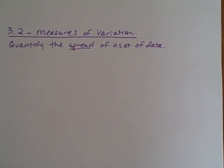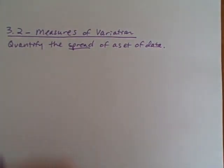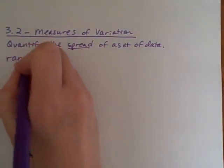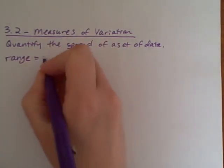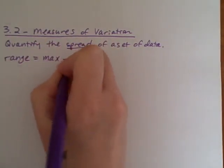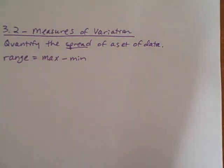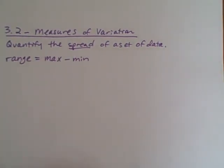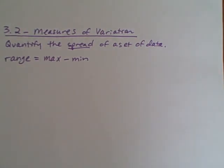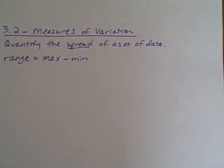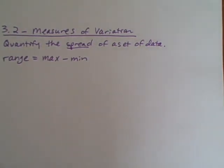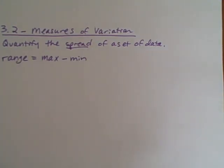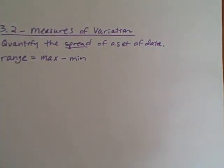There's a couple different ways we can do that. One we actually already talked about when we were doing histograms - we talked about the range being the max minus the min values. That actually is a great way to get a quick and dirty estimate of how spread out a set of data is. The higher the value of the range, the more spread out the set of data.